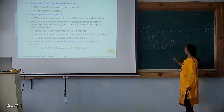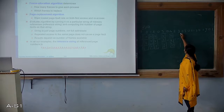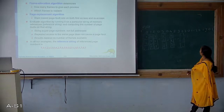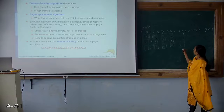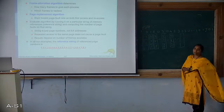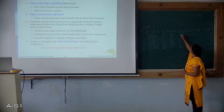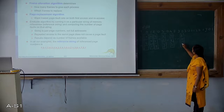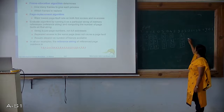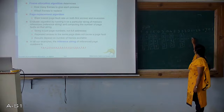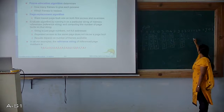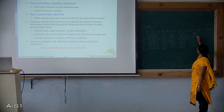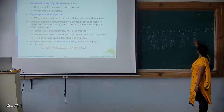2 and 3 are already present — no need of page replacement. Next we need to bring in 0 — which page to remove? 4 is the one not going to be referenced in the future, so remove 4. We get frames 2, 0 and 3. Next, 3 is there — no replacement. 0 is there — no replacement. 2 is there — no replacement. 1 is required — replace a page with 1. 3 is not going to be used in future, so replace 3. Frames: 2, 0, 1.